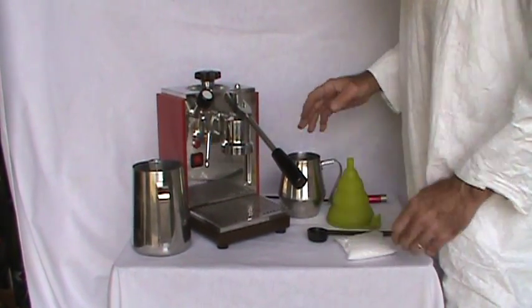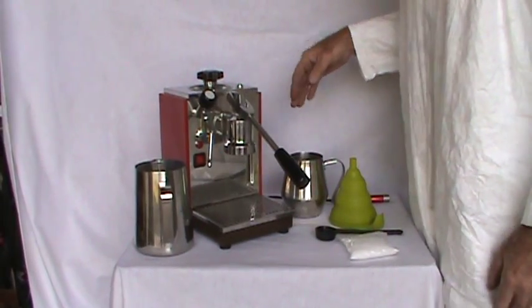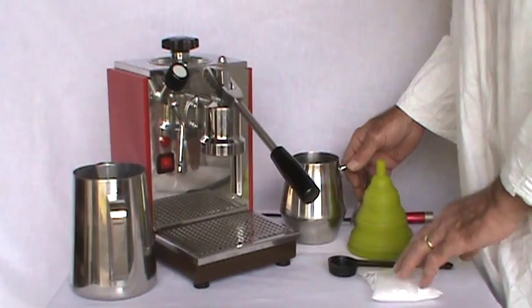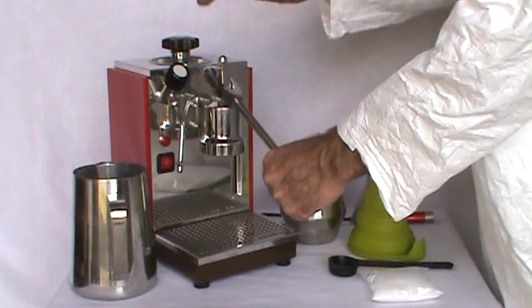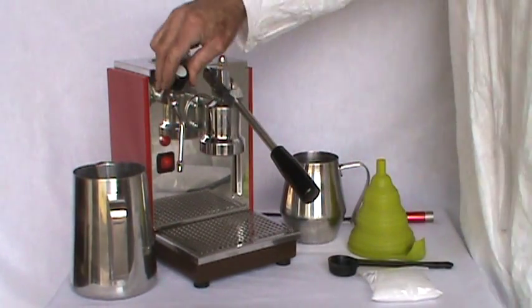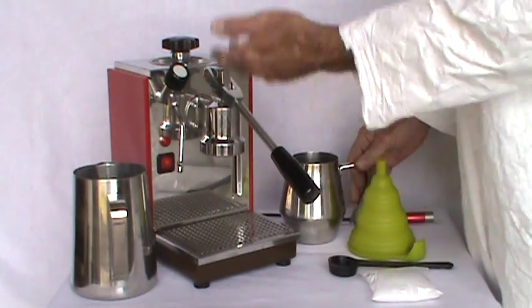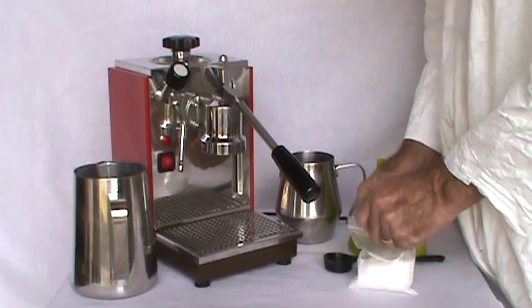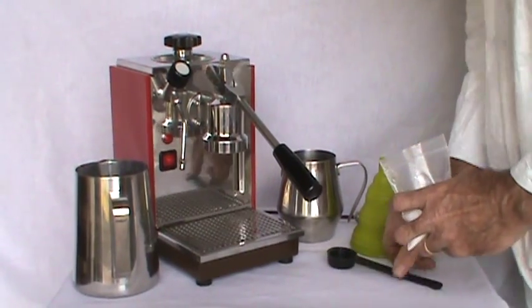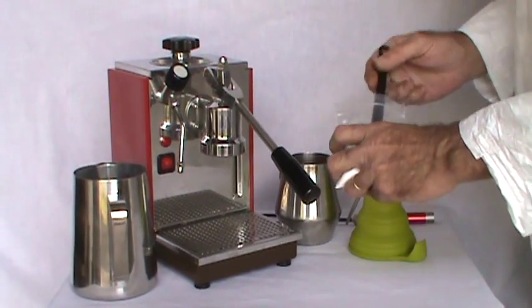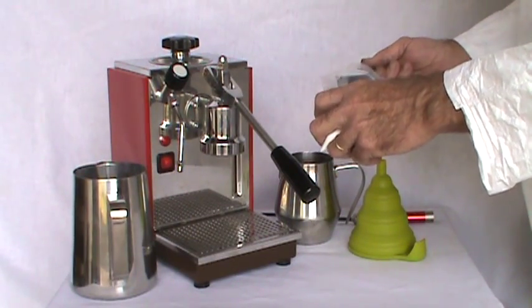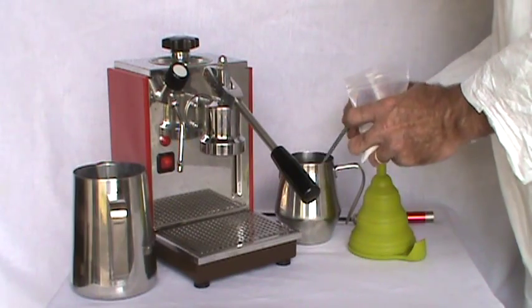Citric acid itself behaves most actively when the water is extremely hot. It dissolves well when the water is hot and it works best when the water is hot. So here we have a machine that is up and running, full of water. We use about one tablespoon per boiler full, or per liter of water.